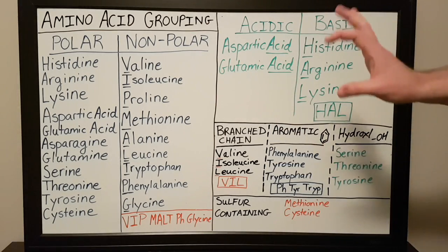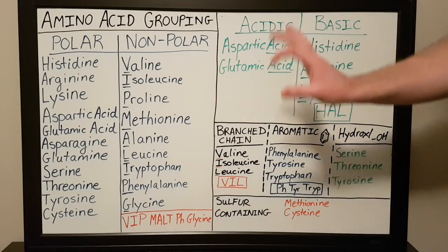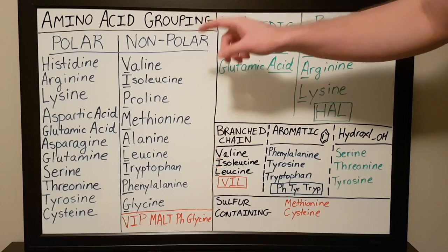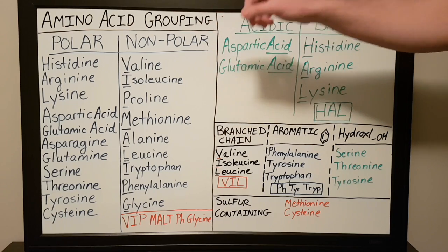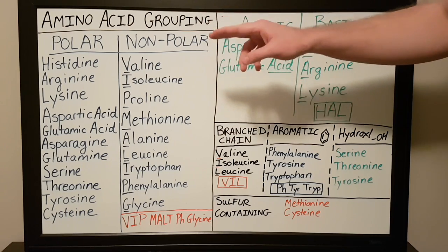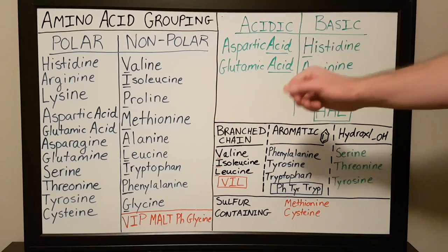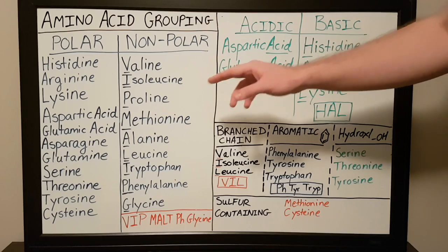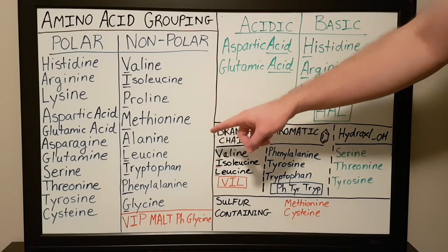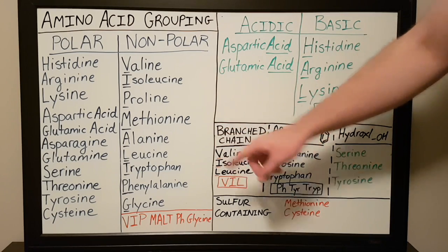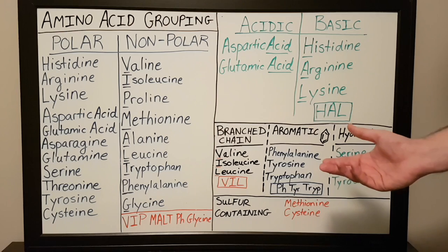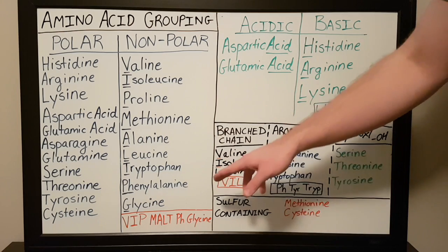To recap: the mnemonic for nonpolar amino acids is VIP MALT PG — glycine. VIP for valine, isoleucine, proline; MALT for methionine, alanine, leucine, tryptophan; PH for phenylalanine; and then glycine. Hopefully that'll help you remember the amino acids that are nonpolar.